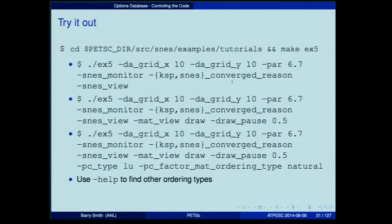You can also control solver options like PC type. Setting PC type to LU means using a direct solver. You can also set a matrix ordering like natural with PC factor mat ordering type. There's an organization to the option names that exactly matches what you write in code. For example, PC factor set mat ordering type becomes the same option with underscores, no caps, and the word 'set' is dropped. So if you know the functional interface, you can pretty much always guess the options database option, and vice versa.